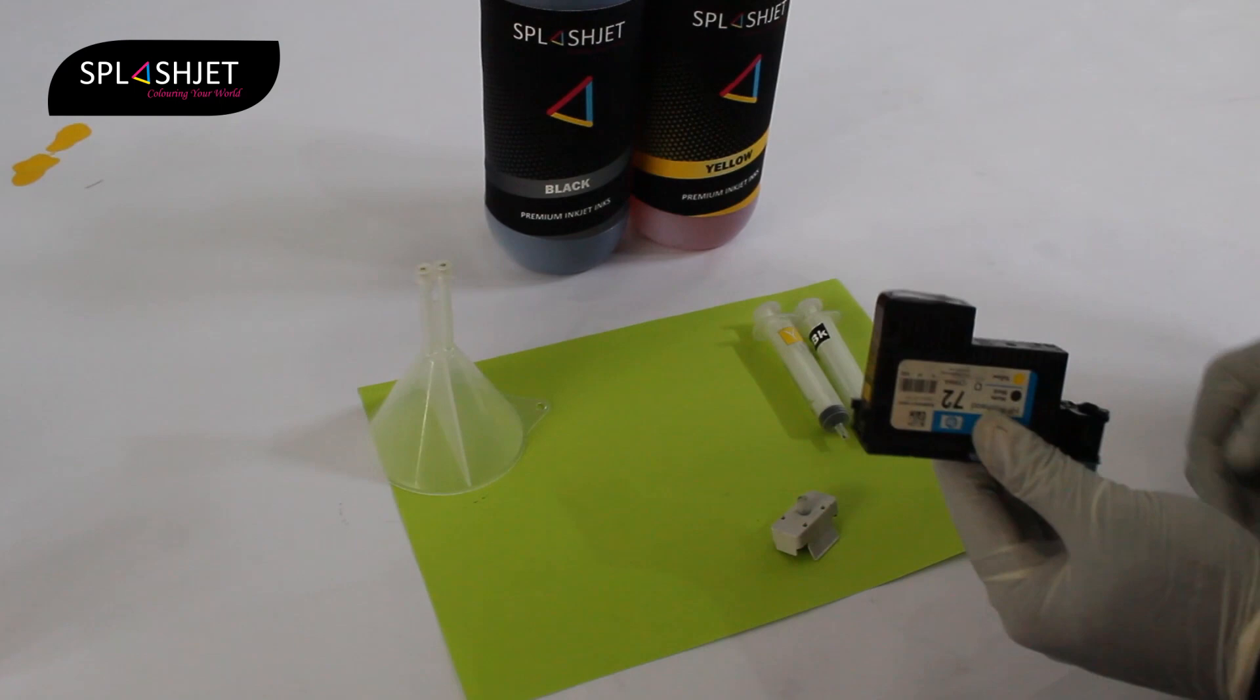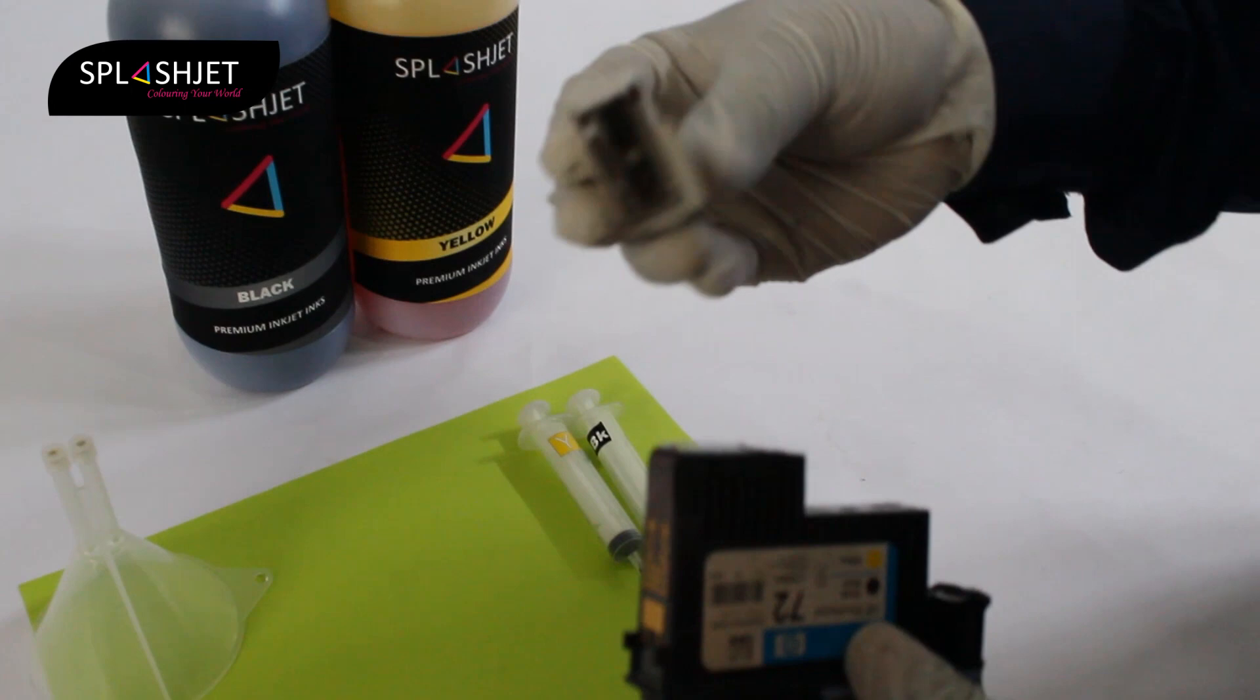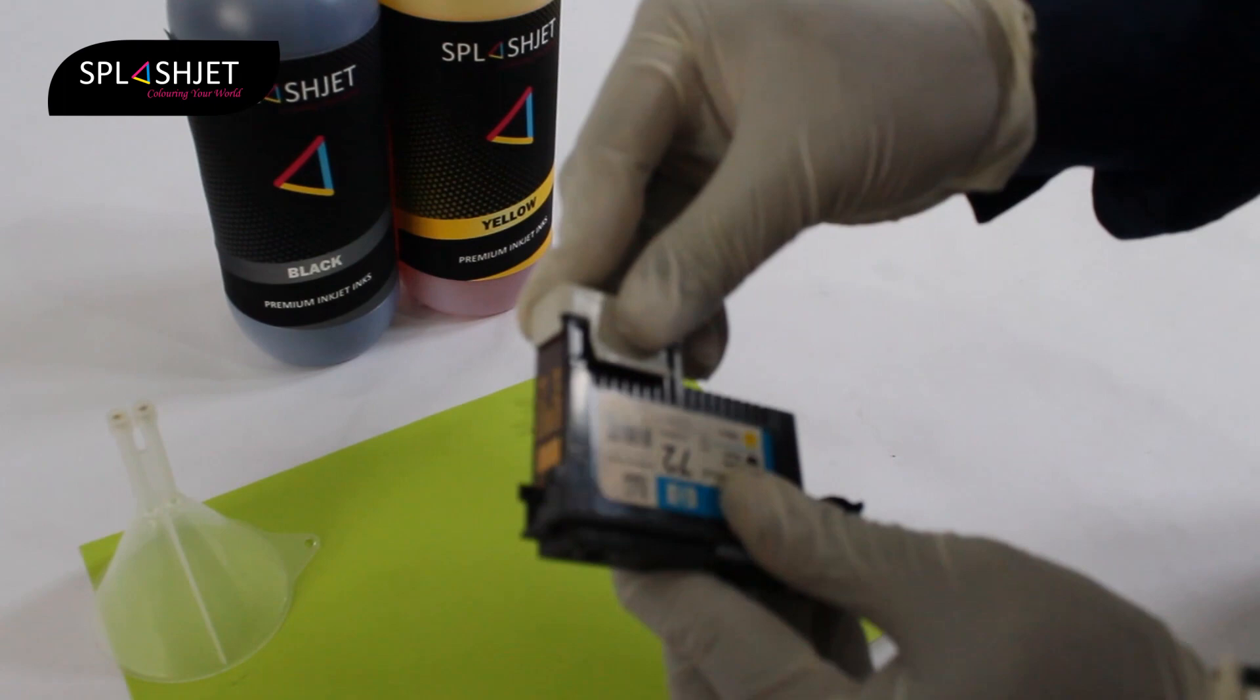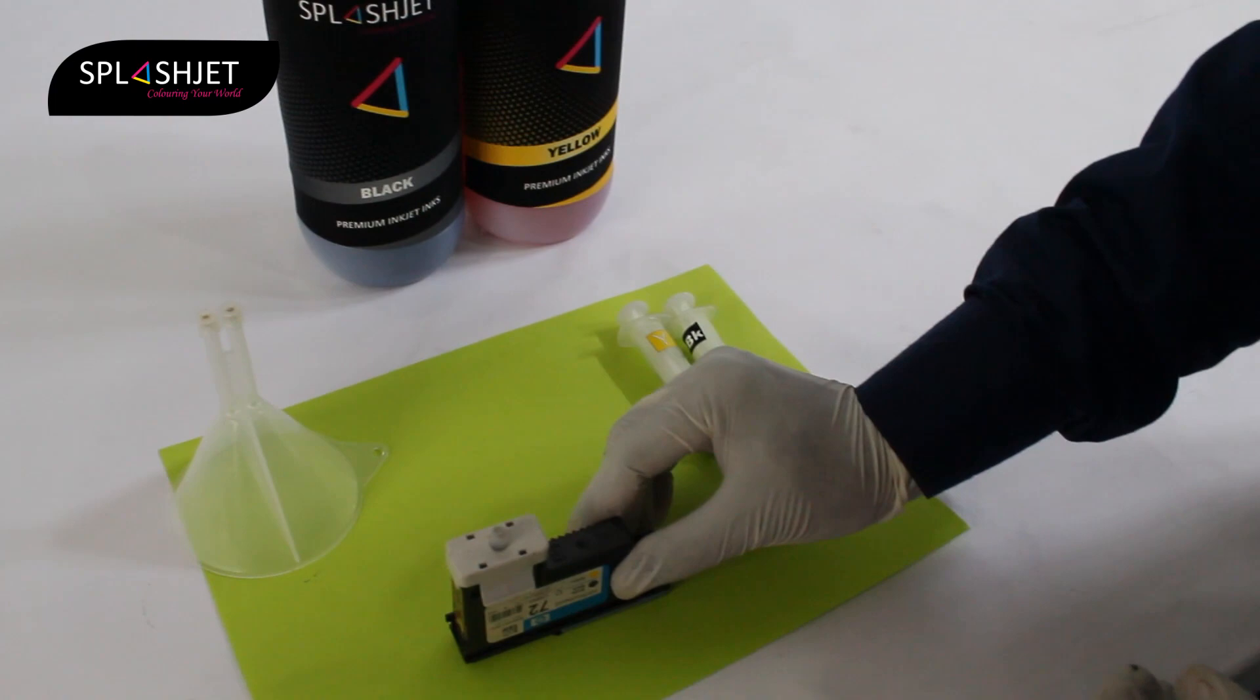Then we have a special adapter called a priming tool which fits precisely on the print head. It is slightly tight to fit in, but it ensures an airtight connection between the tool and print head.